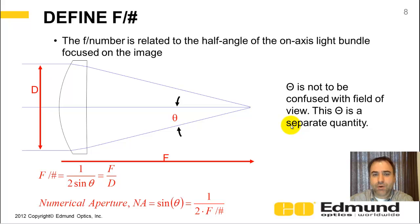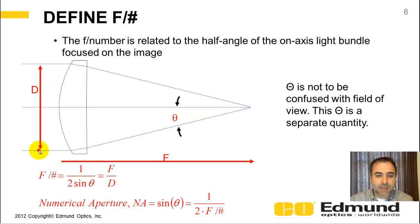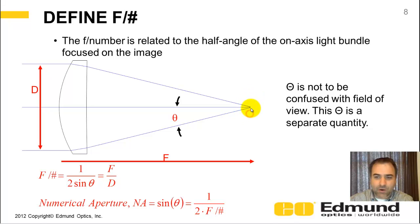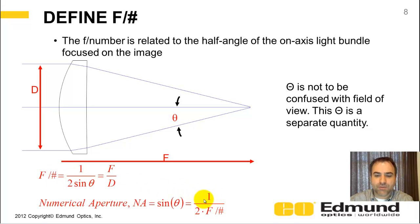Let's define F number. The F number is related to the half angle of the on-axis light bundle for a focused image. The easiest way to see it: F number equals focal length divided by the entrance pupil diameter — simply F over D. Some people prefer to use numerical aperture, NA, which is essentially the sine of that half angle. Microscopists love NA because they're looking at a cell or some minuscule object. The F number and NA are inversely related to each other with a factor of a half.